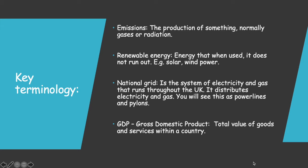National grid — this is something we're going to see in one of the PDF files. It's the system of electricity and gas that runs throughout the UK, and it distributes electricity and gas. You'll see this as power lines and pylons, and for gas they're going to be in pipes under the ground. That's also kind of a part of infrastructure, so be aware of that.